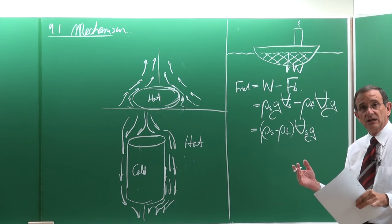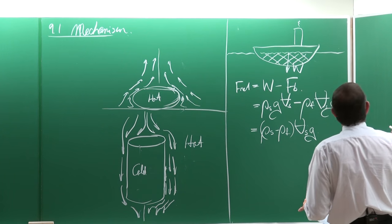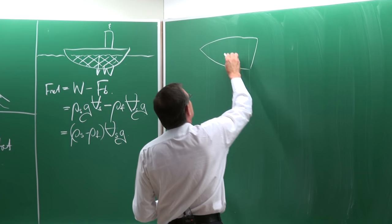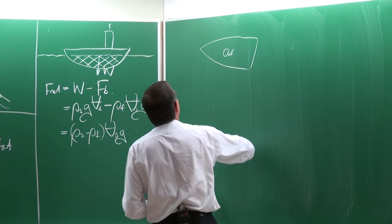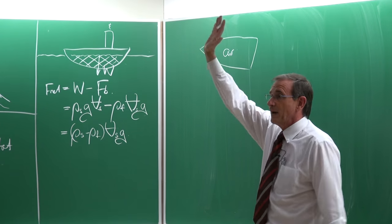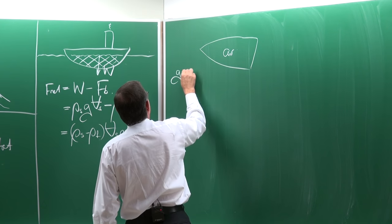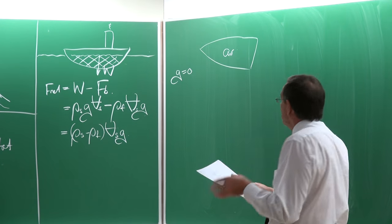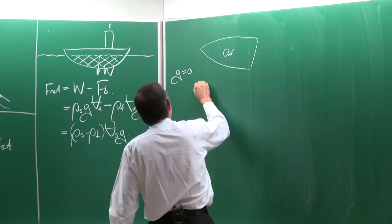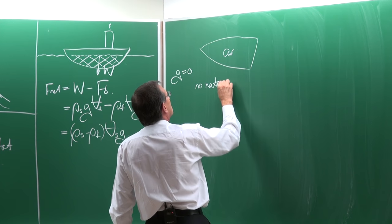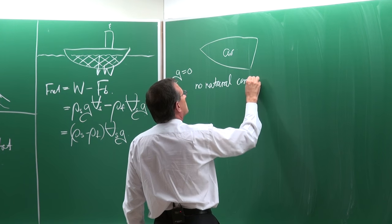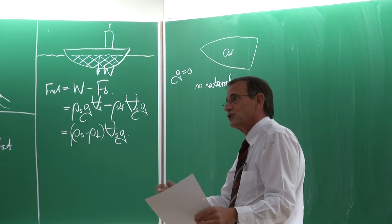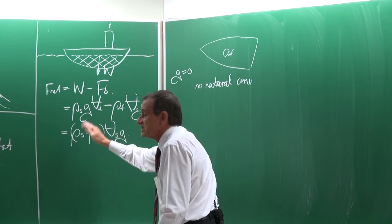An interesting case: suppose there's a spacecraft full of air, outside in space where g equals zero. Then there can be no natural convection — even although inside the spacecraft there is air, there cannot be natural convection because g equals zero.